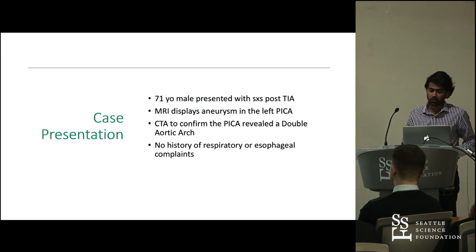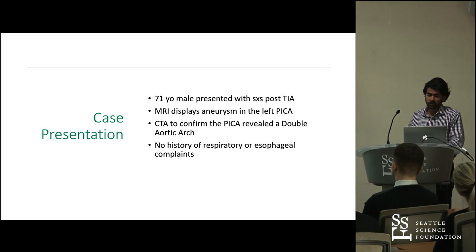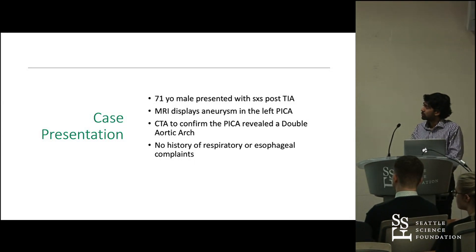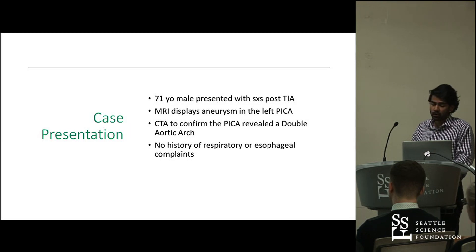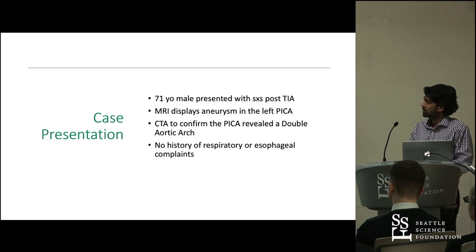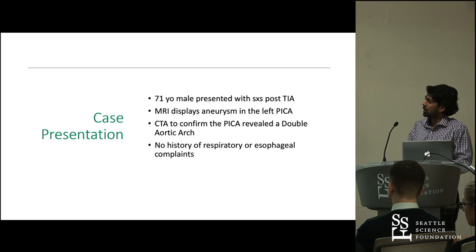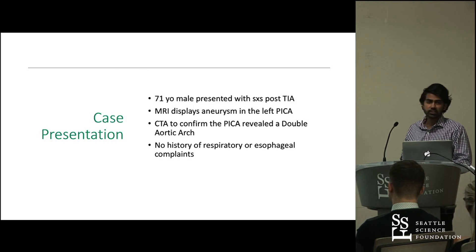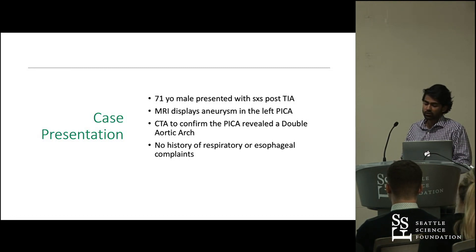Here's the case presentation. A 71-year-old male presented with symptoms post-transient ischemic attack. An MRI was done and displayed an aneurysm in the left PICA — the posterior inferior cerebellar artery. A CTA was performed to confirm the PICA aneurysm, and it revealed that a double aortic arch was also present. This patient had no history of respiratory or esophageal complaints, which was quite remarkable given that he was 71 years old with such a compressive structure and had never experienced symptoms.